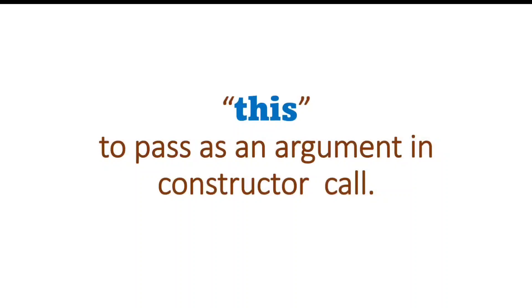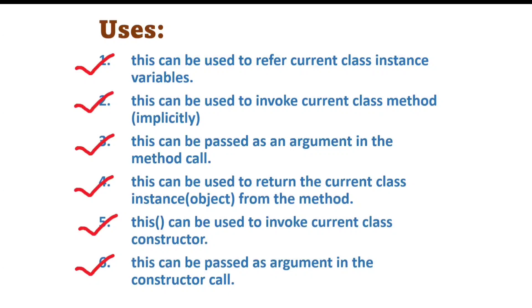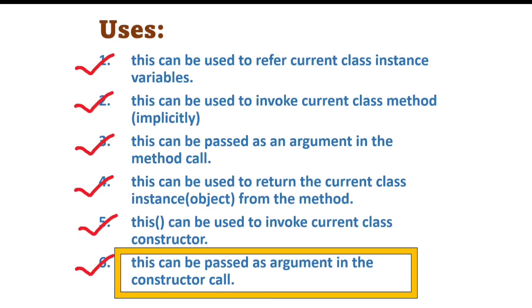Hello everyone. In this tutorial we are going to discuss how the 'this' keyword can be used to pass as an argument in a constructor call. This is the 6th use of the 'this' keyword. All 5 previous uses have already been explained in previous tutorials. You can find links to all those videos in the description of this video.